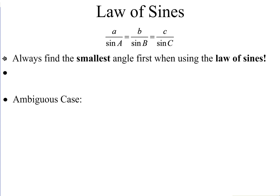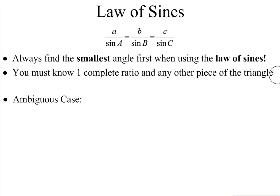In order to use the Law of Sines, you must know one complete ratio and any other piece of the triangle. So I need to know an angle and the side opposite it. In this formula, lowercase letters A, B, and C represent side measures; uppercase letters A, B, and C represent angle measures. The corresponding side and angle are across from one another. We need to know a side and an angle opposite, then any other piece of information about the triangle.